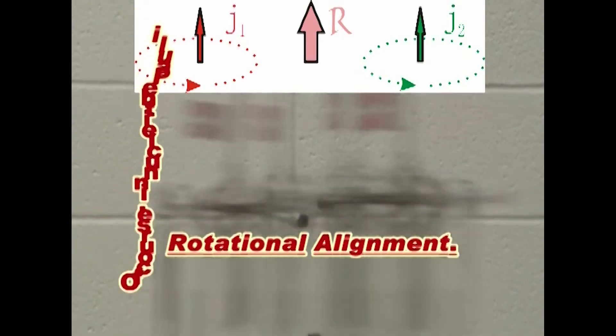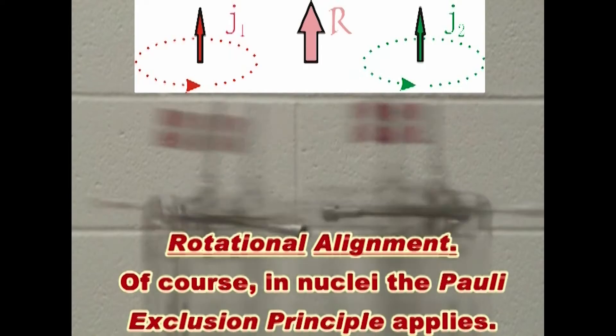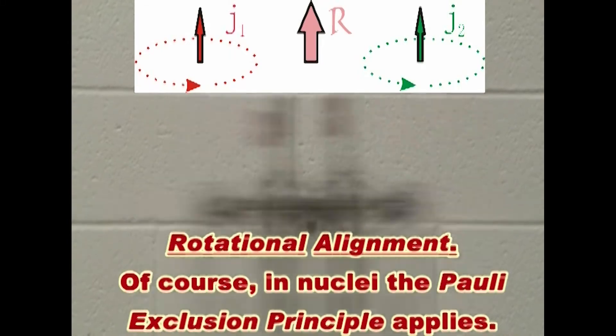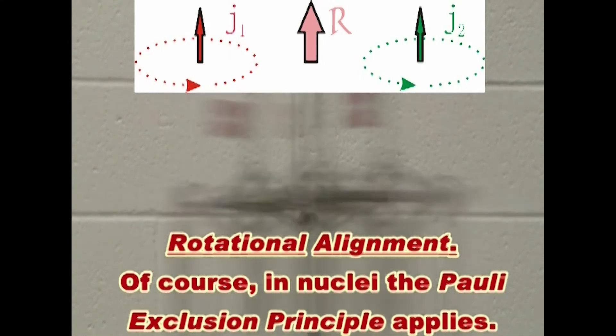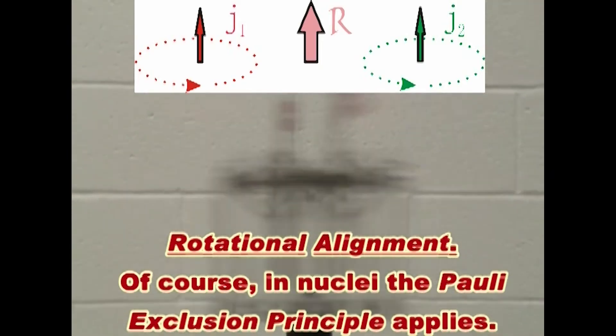And now we have unpaired a pair of high J particles, a specific pair of particles in the nucleus. And the experimental signature for this is a dramatic change in the moments of inertia of the nucleus as witnessed by the gamma ray emission spectrum.